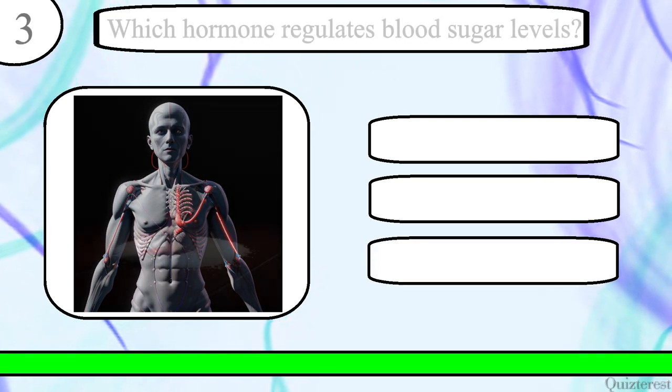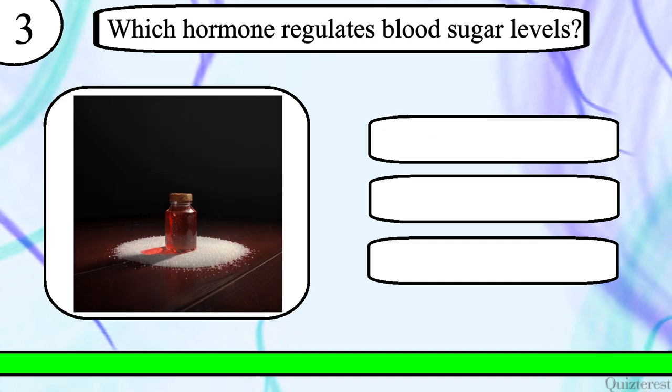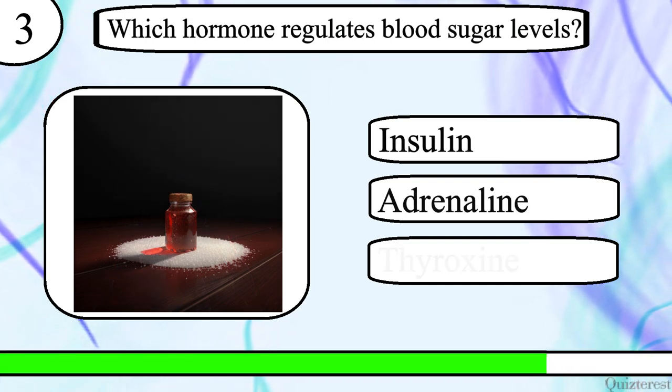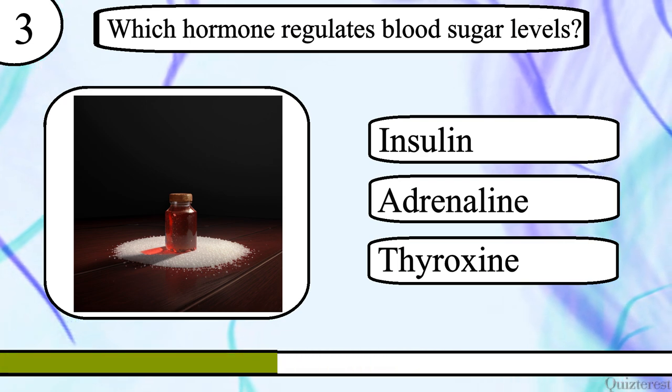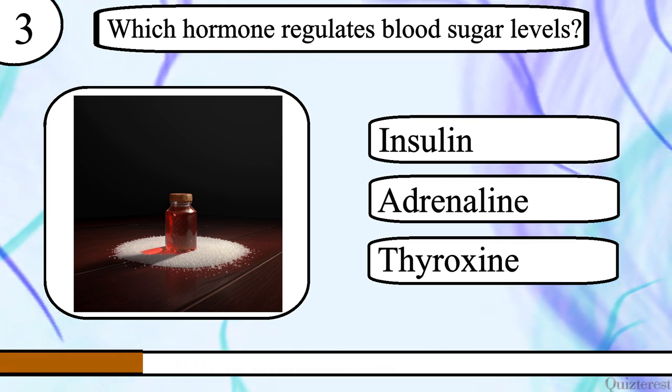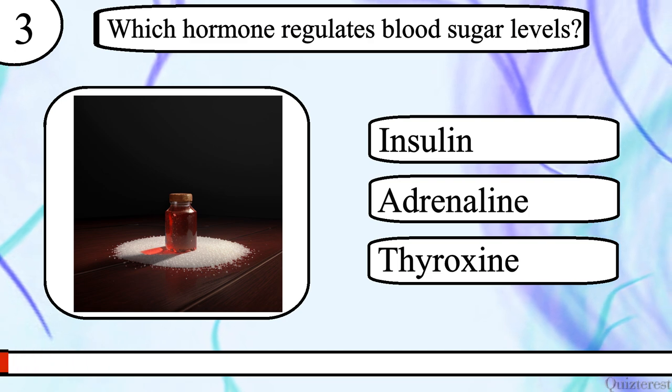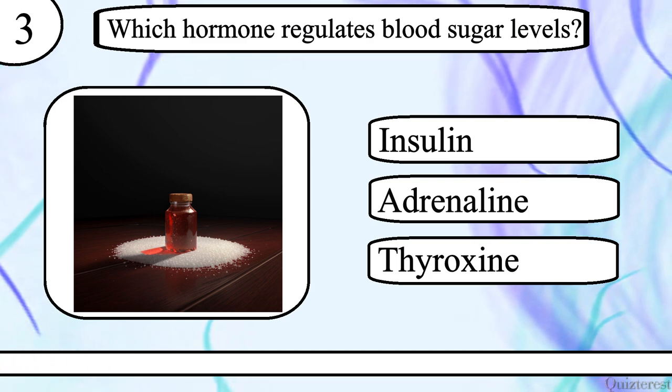Question 3. Which hormone regulates blood sugar levels? Insulin, adrenaline or thyroxine? The correct answer is insulin.